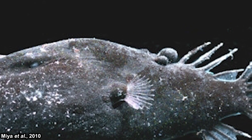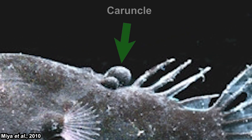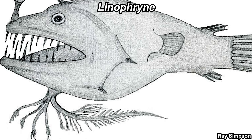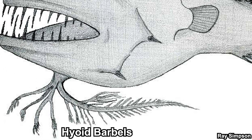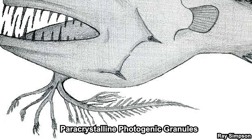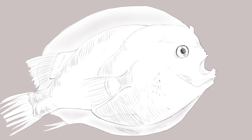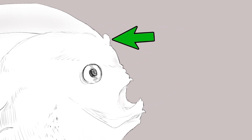Some anglerfish have caruncles, which can be found in front of the dorsal fin. Caruncles are basically a side-grade to the esca without the illicium — these also have bacteria. The other light organ in anglerfish is the hyoid barbels, especially in Linophryne. These hyoid barbels don't have bacteria; they produce light with paracrystalline photogenic granules.